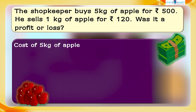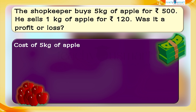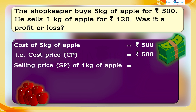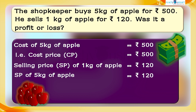We know that the cost of five kilograms of apple is rupees 500, so this is the cost price. He sells one kilogram of apple for rupees 120. Therefore, the selling price of five kilograms of apple is rupees 120 multiplied by 5, which equals rupees 600.